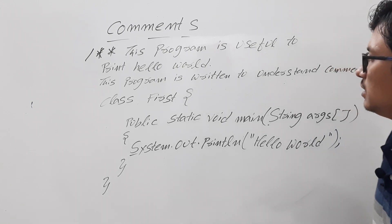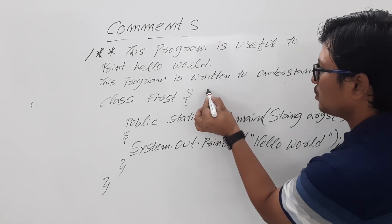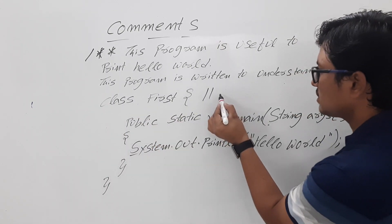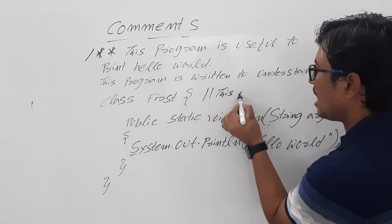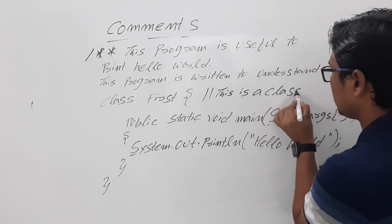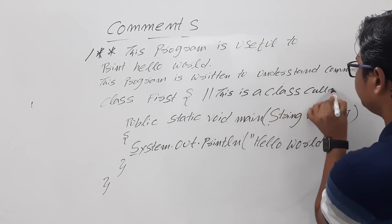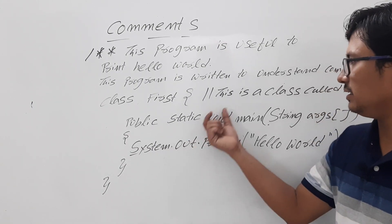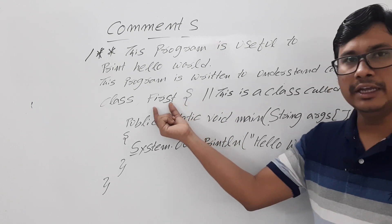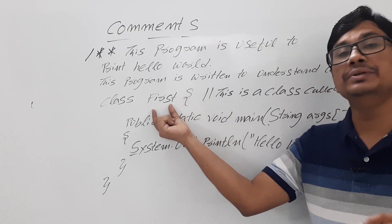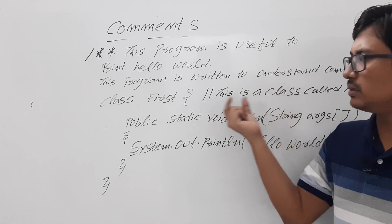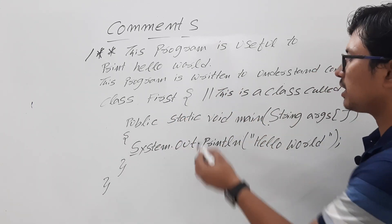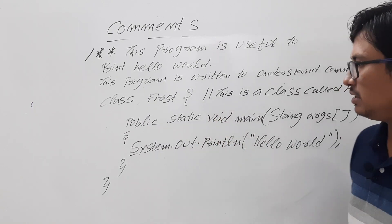Now let me add the comments. I want to represent the single line comment. I write two slashes and then 'this is a class called First'. You can also write things like the file name and class name should be the same. This is what we call a single line comment. Once you compile this program, the compiler will ignore these comments.